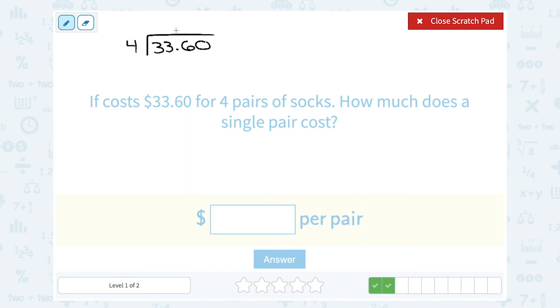We're going to line up our decimal point right above our decimal point here. How many times does four go into 33? A little bit more than eight times, because we know eight times four gives us 32.